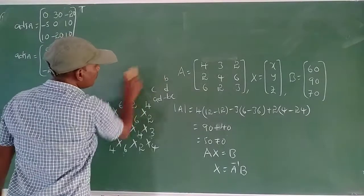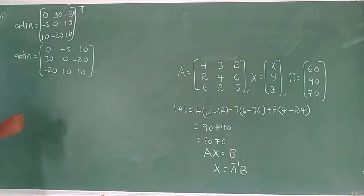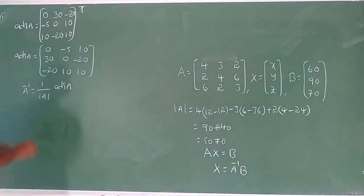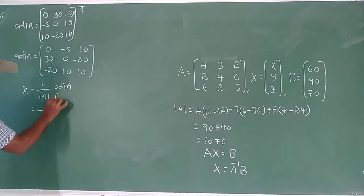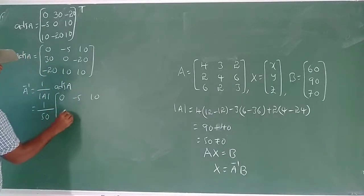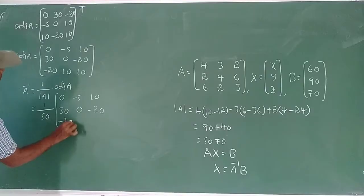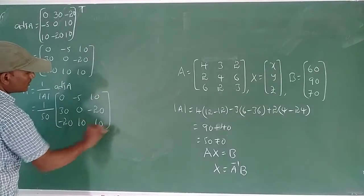Next, A inverse equals (1/det A) × adjoint A = (1/50) × adjoint A. So A inverse = (1/50) × [0, −5, 10; 30, 0, −20; −20, 10, 10].